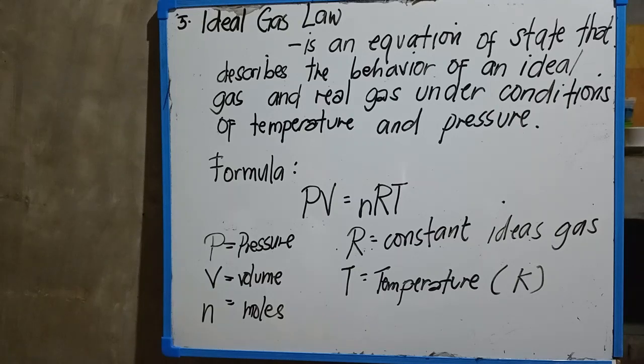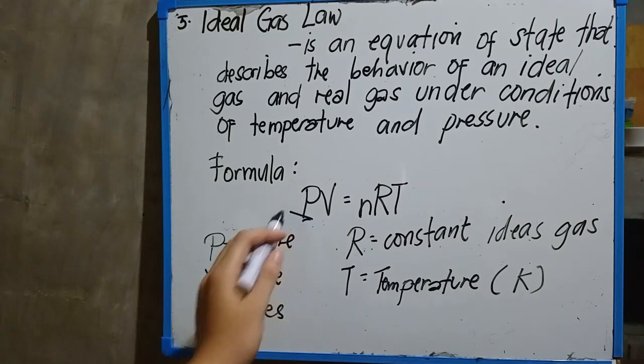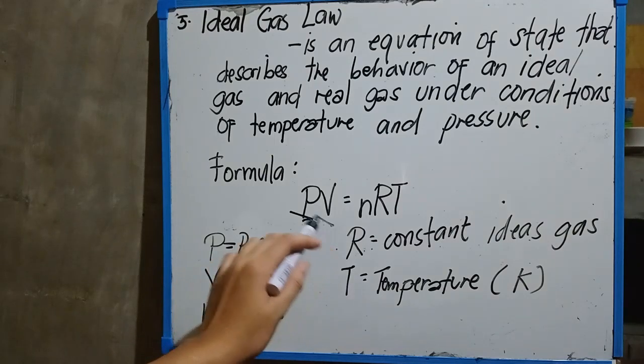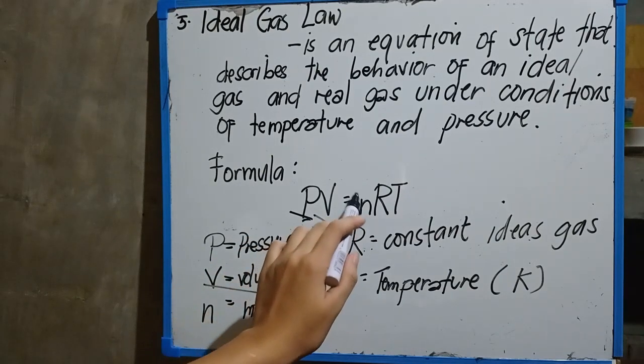The ideal gas law has a formula of PV = nRT. P stands for pressure, we all know that pressure we used in the last four laws of gas. Then V for volume, and this n is for moles.